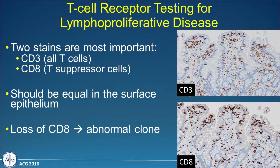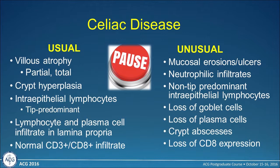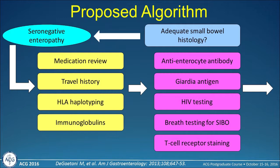For T-cell receptor testing in patients with a predominance of intraepithelial or lamina propria lymphocytes: in the small bowel, you should have CD3 and CD8 cells in equal numbers. When you start to see a loss of CD8, that represents an abnormal clone. The staining pattern can be very helpful — intense CD3 staining with a paucity of CD8 staining indicates clonality. When we see erosions, neutrophilic infiltrates, non-tip predominance of IELs, loss of goblet cells or plasma cells, and loss of CD8 expression, that ought to give us pause and prompt consideration of these other mimickers.